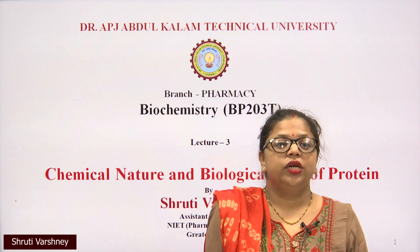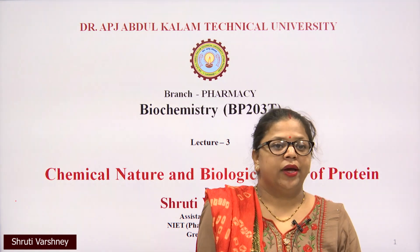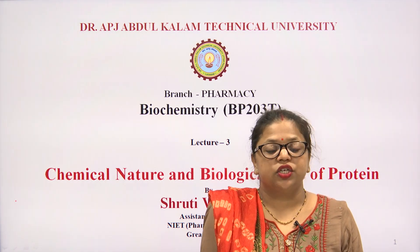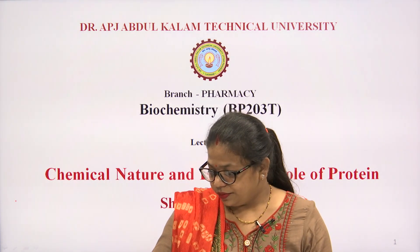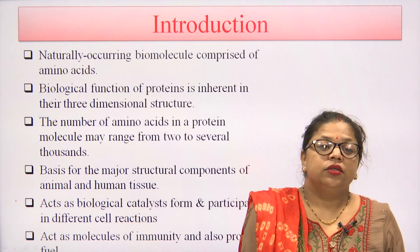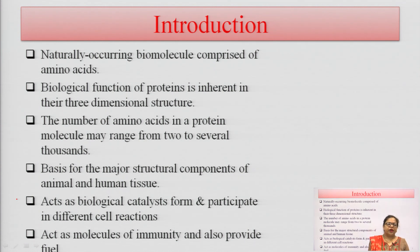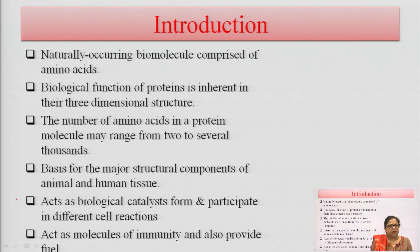Dear students, today's topic of biochemistry unit one is chemical nature and biological functions of proteins. As an introduction: proteins are naturally occurring biomolecules comprised of amino acids. The monomer unit of protein is amino acid, and when they react together, they form proteins.